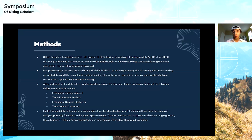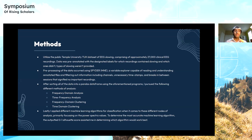After sorting all the data into a Pandas dataframe, I pursued the following different methods of analysis: one, frequency domain analysis; two, time-frequency analysis; three, frequency domain clustering; and four, time domain clustering. Essentially all of them fall under a similar idea — a time versus frequency plot, where frequency is correlated with the power spectral density. From there, once we get different graphs, we're able to apply machine learning on top of that, primarily focusing on the power spectral density values.